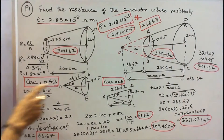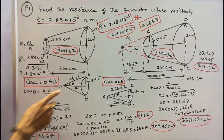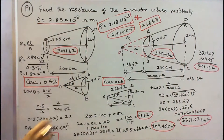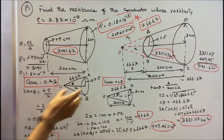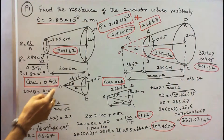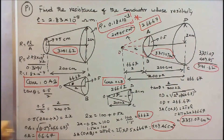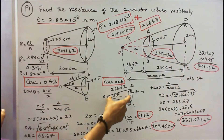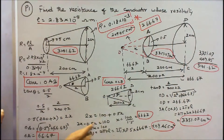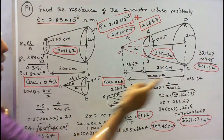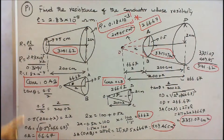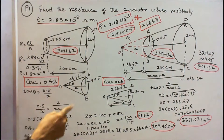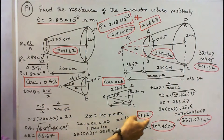Taking cone OAB first, tan θ equals 0.5 divided by x. For cone OCD, tan θ equals 2 divided by (200 plus x). Equating these two expressions: 0.5/x = 2/(200 + x), from which we find x is equal to 66.67.